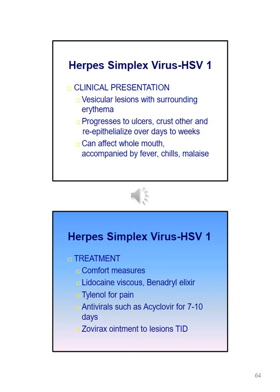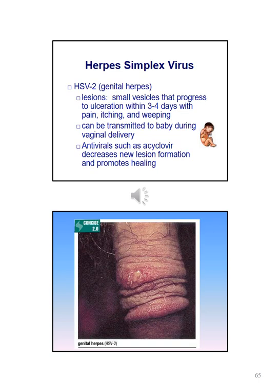Treatment for HSV-1 includes comfort measures. Lidocaine viscous or Benadryl elixir may be beneficial. Medications for pain such as Tylenol may be used. Acyclovir is usually the antiviral prescribed; there are other options and ointments such as Zovirax. HSV-2 consists of lesions described as small vesicles that progress to ulceration within 3–4 days with pain, itching, and weeping. It can be transmitted to a baby during vaginal delivery. Antivirals such as acyclovir can help decrease new lesion formation and promote healing.